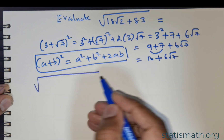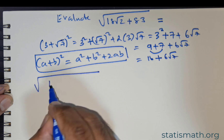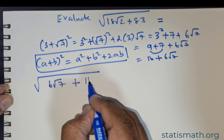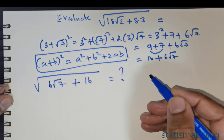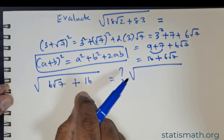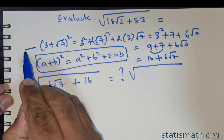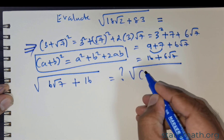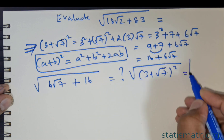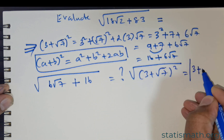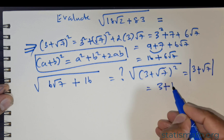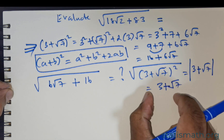Now if you are asked to find the square root of 6√7 + 16, what would you do? Obviously, you will replace 6√7 + 16 with (3 + √7)². Applying the square root gives you the modulus of (3 + √7), which in turn gives you 3 + √7. So this is the final solution.